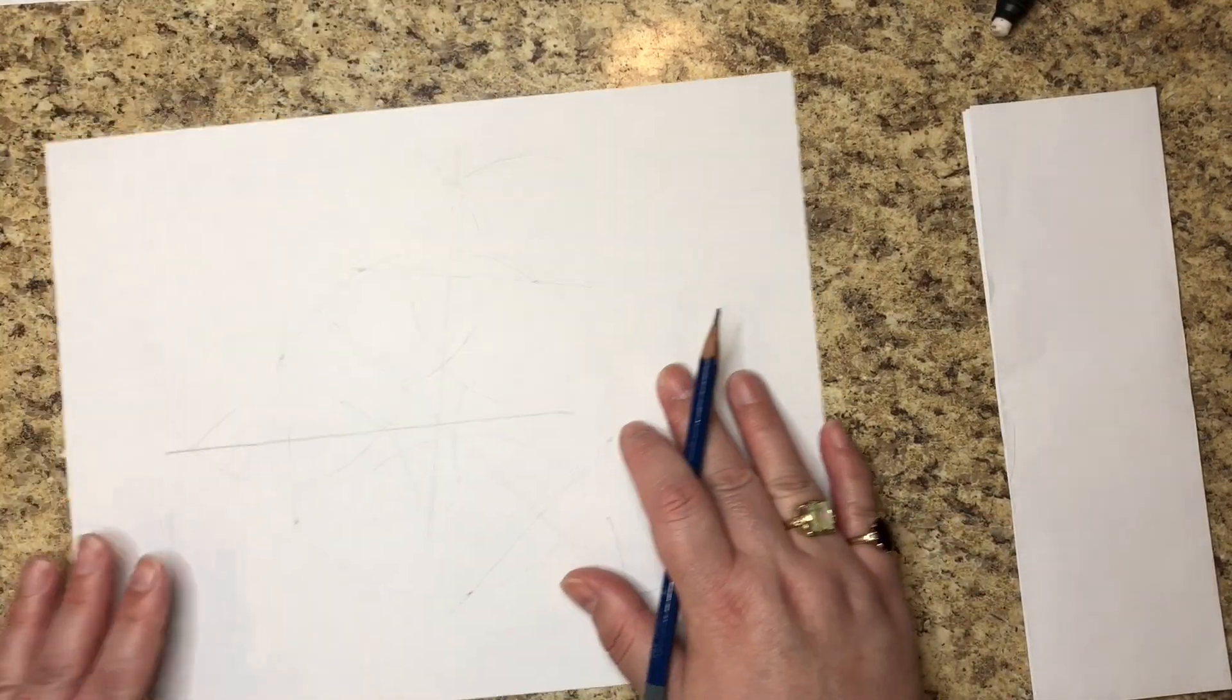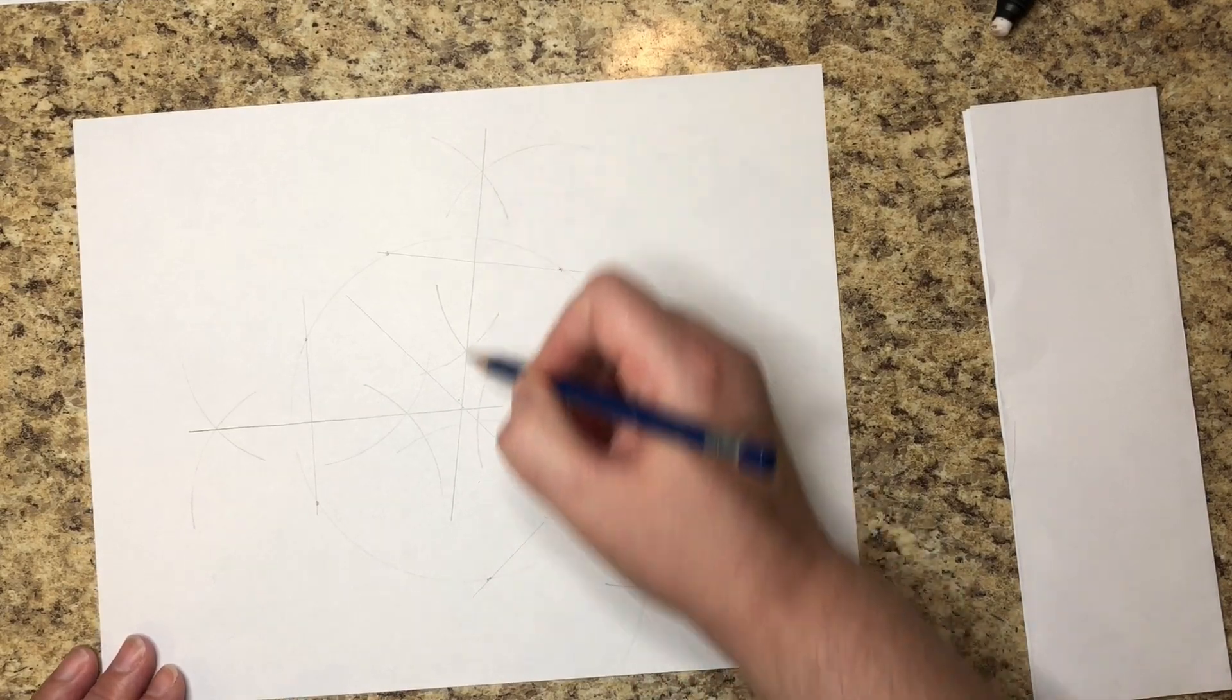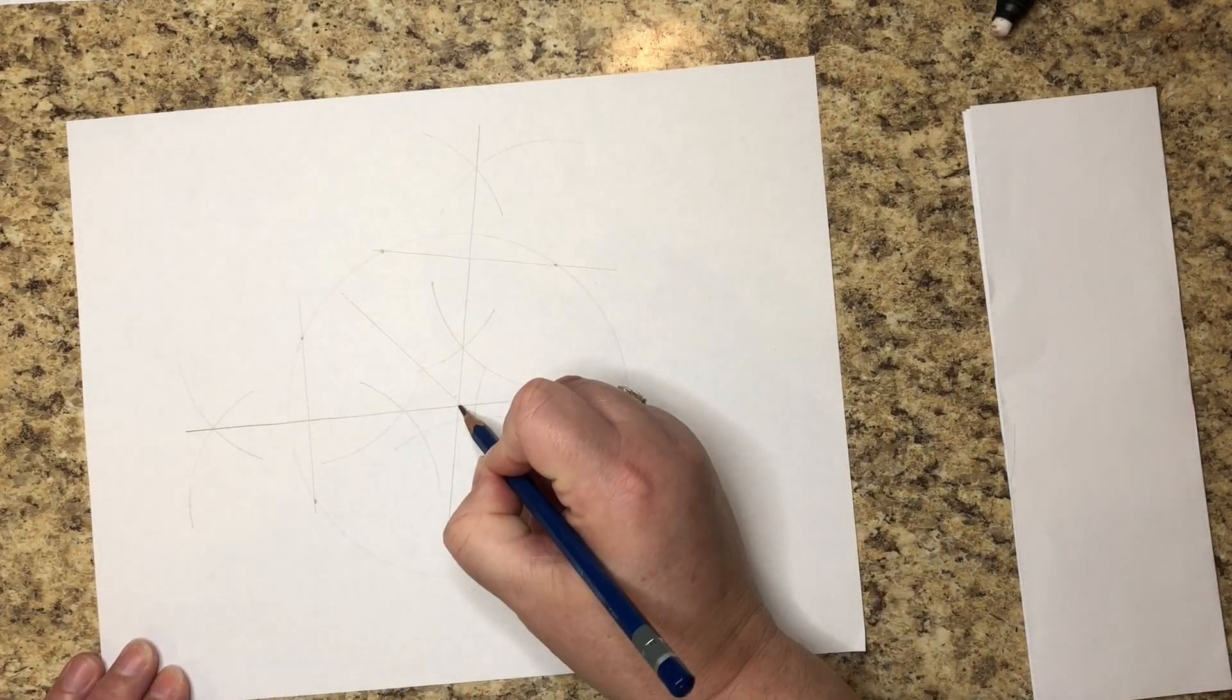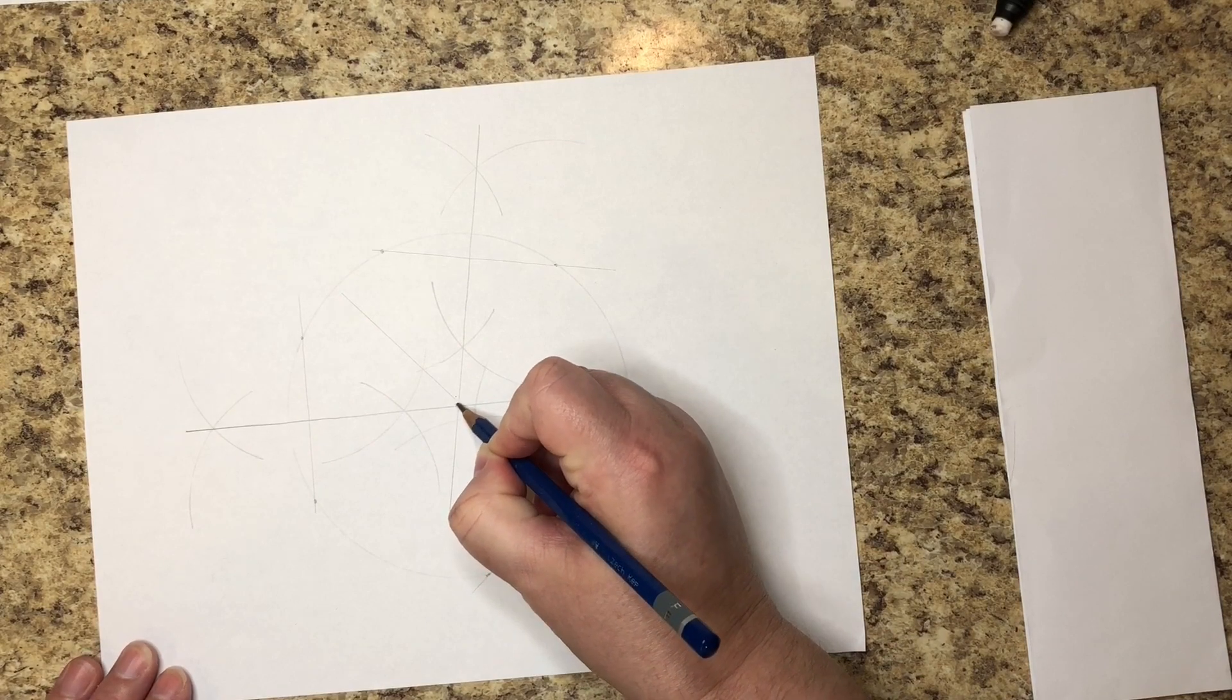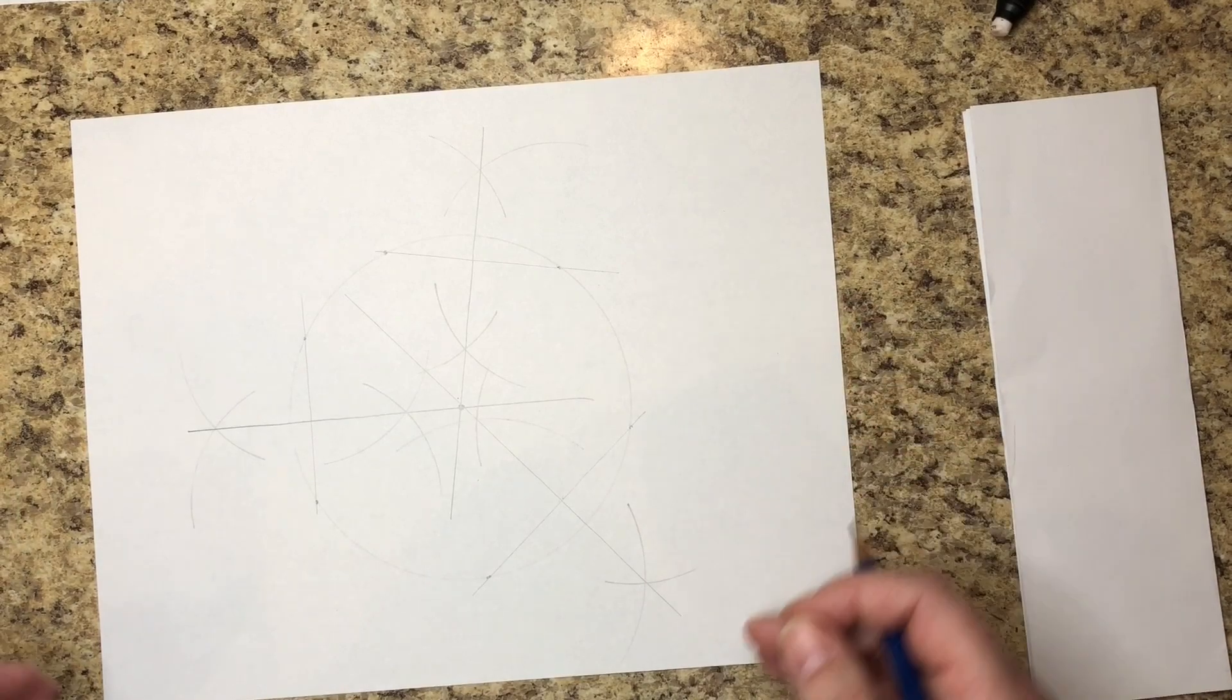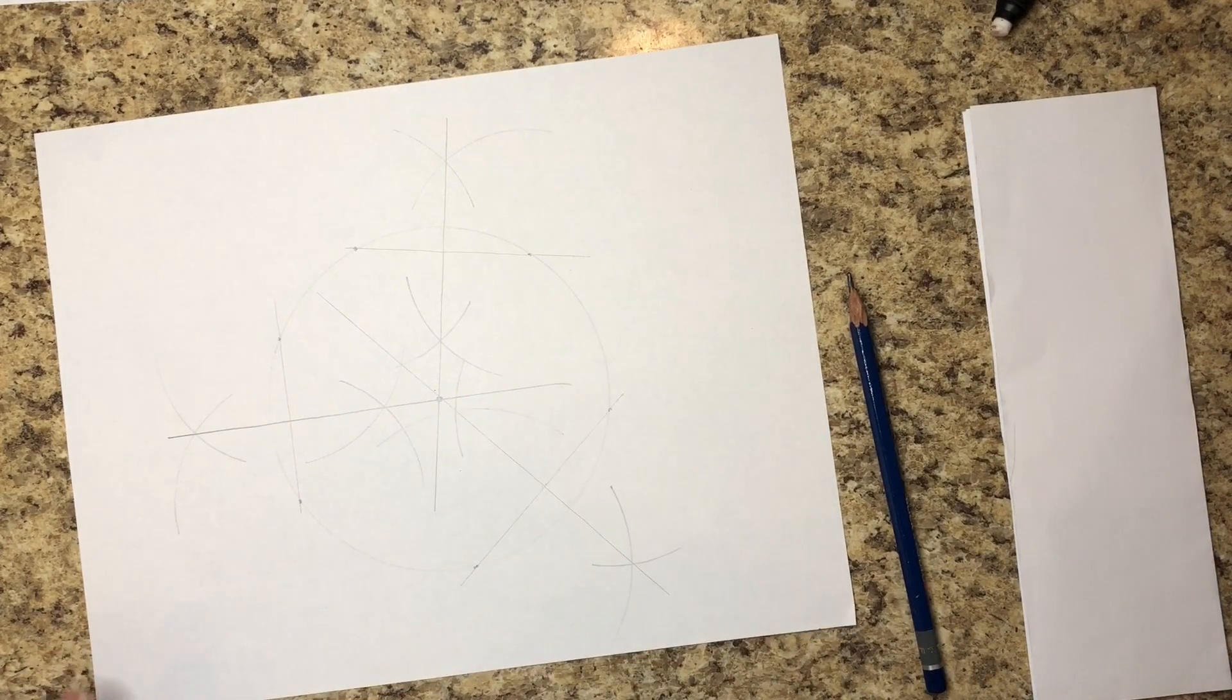Okay, now the point where all three of these lines intersect is right here, and again you could have done this with just two lines but if you do three you just double check yourself. That's the center of the circle.